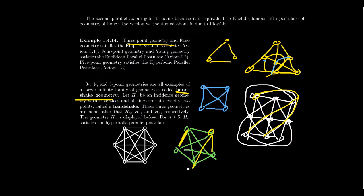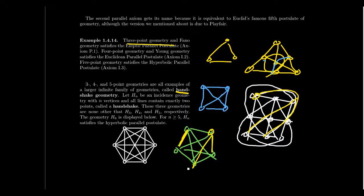Handshake geometry means every line contains exactly two points. Think of it like going around a meeting shaking everyone's hand — there's a line between two points if they shake hands. You can't have three people shaking hands at once, so a handshake is a line with exactly two points on it. In handshake geometry, you take every possible pair of points, so the number of lines equals n-choose-2.